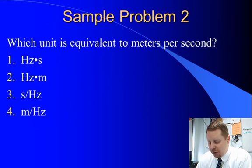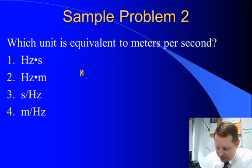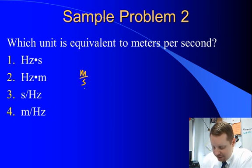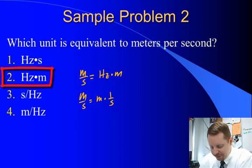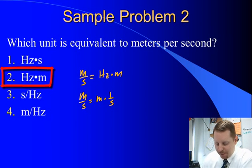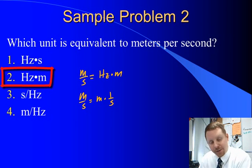Which unit is equivalent to meters per second? Well, a meter per second, 1 over a second is a hertz, so that must be a hertz times a meter. Because a meter per second is 1 meter times 1 over seconds. Therefore, the correct answer must be 2, a hertz times a meter.